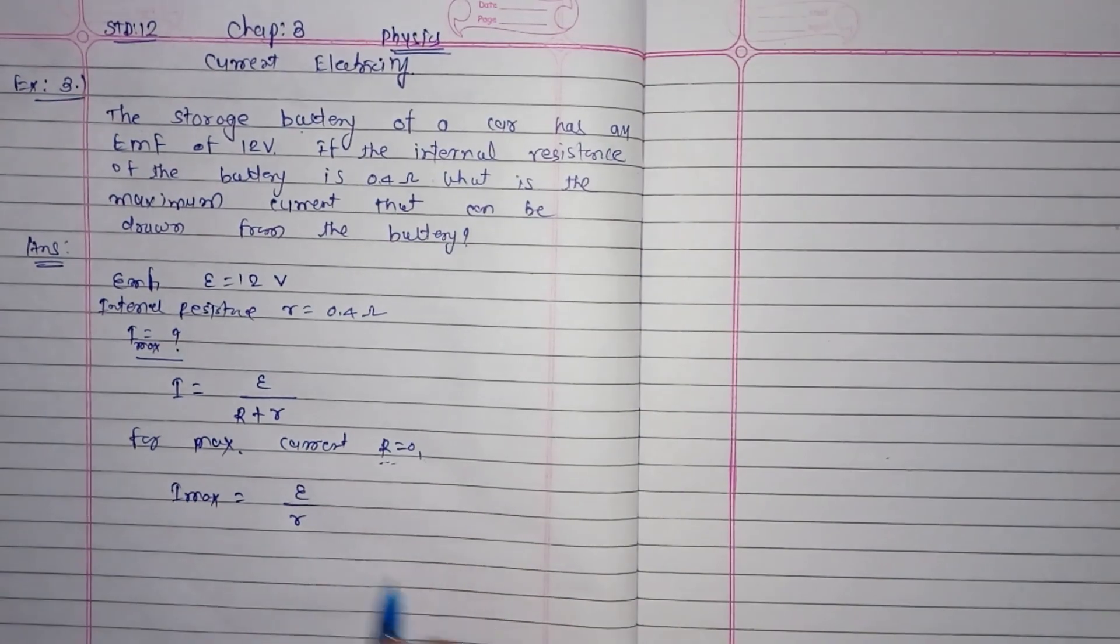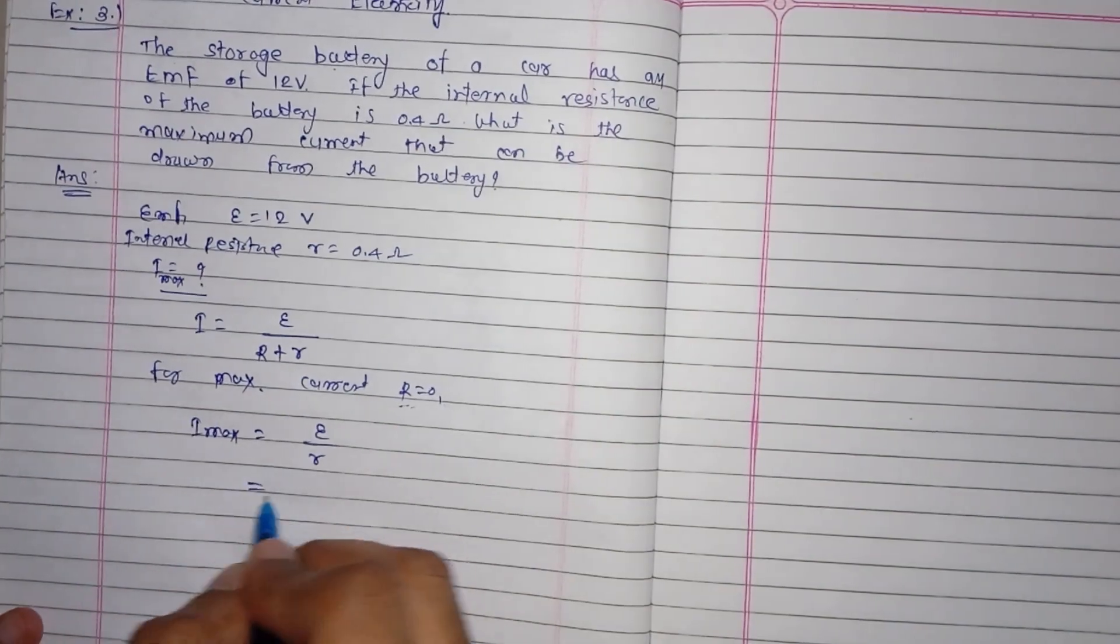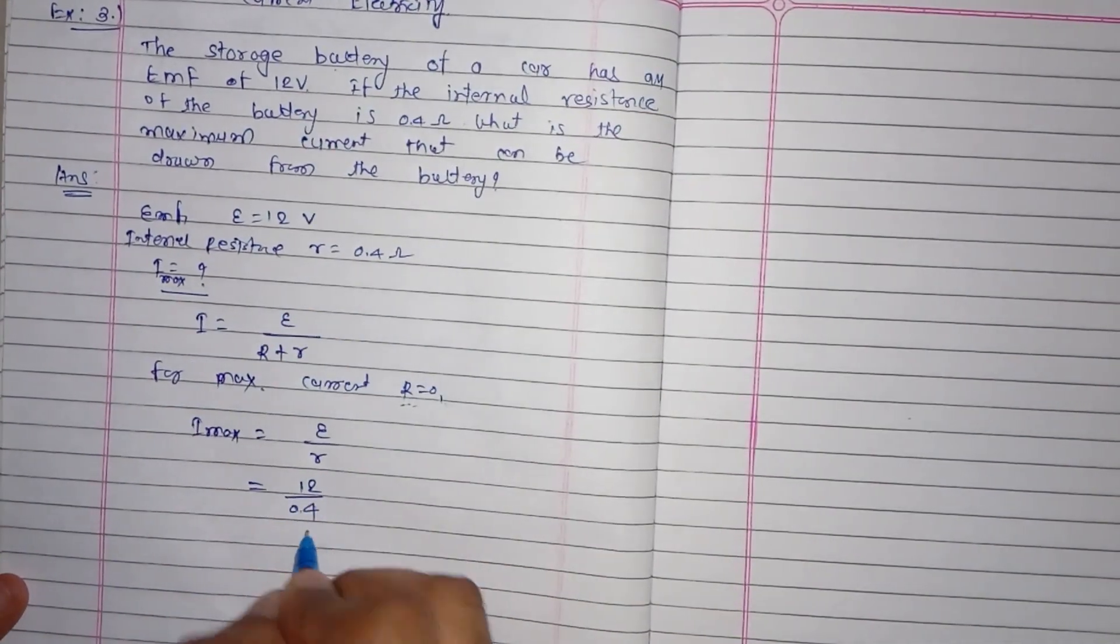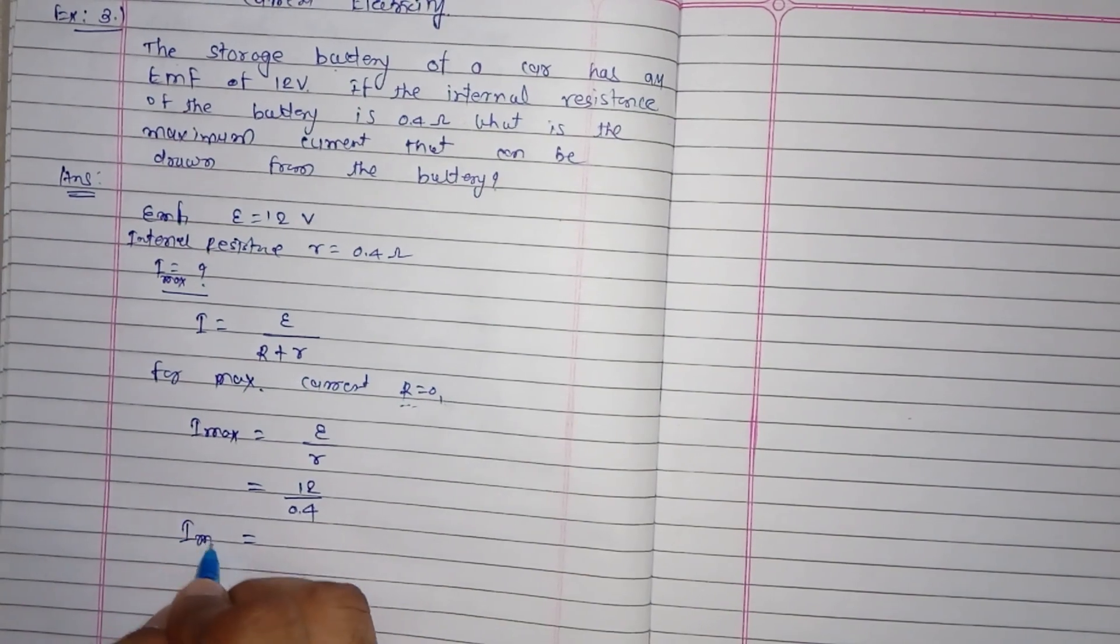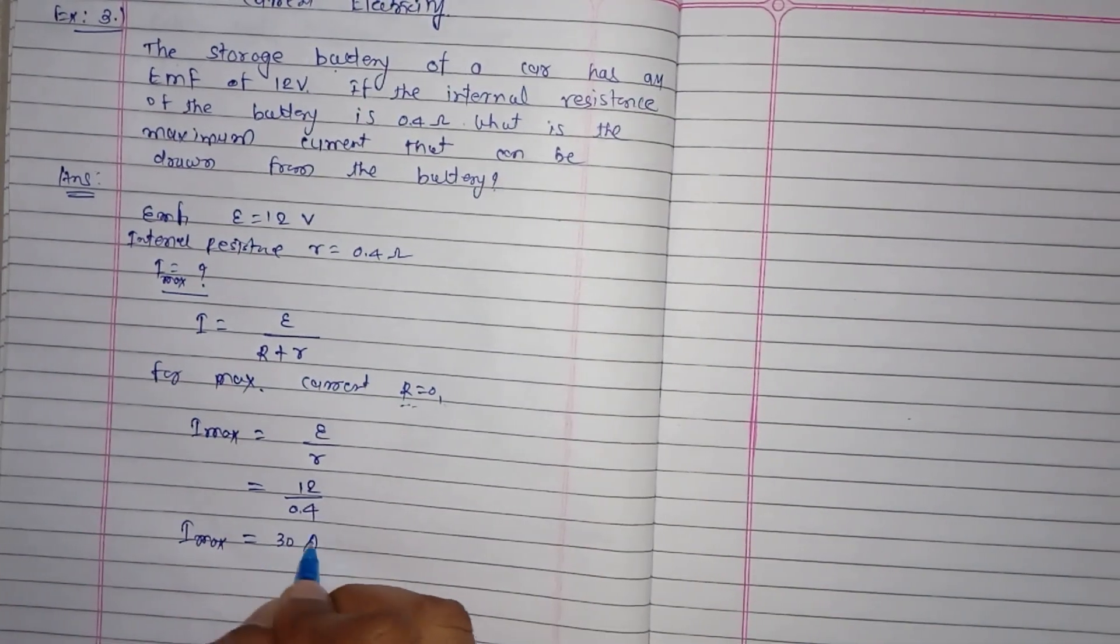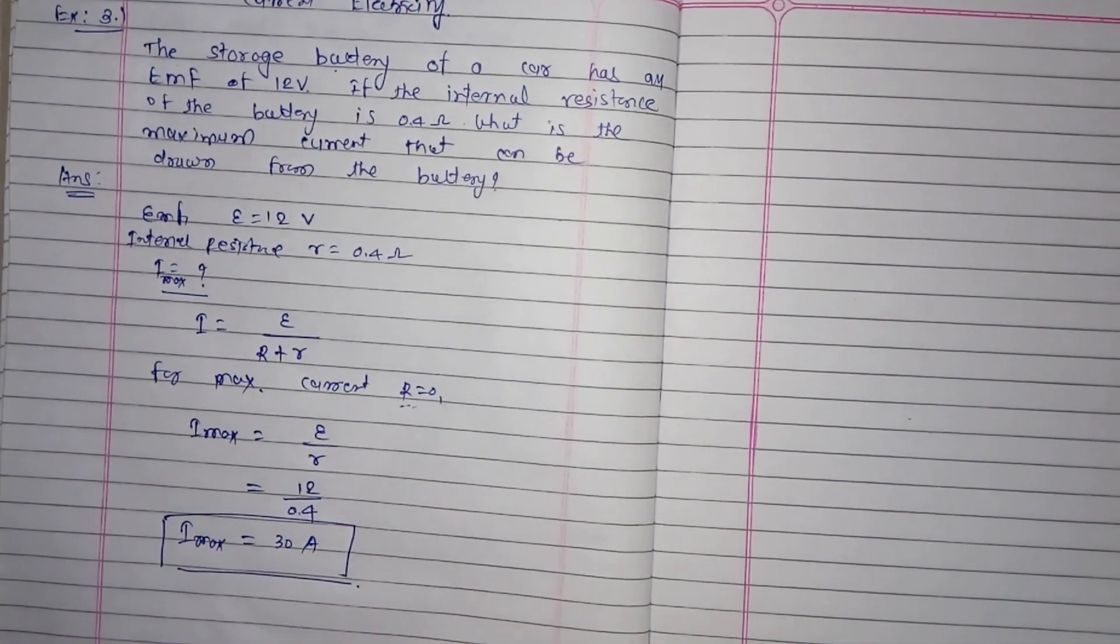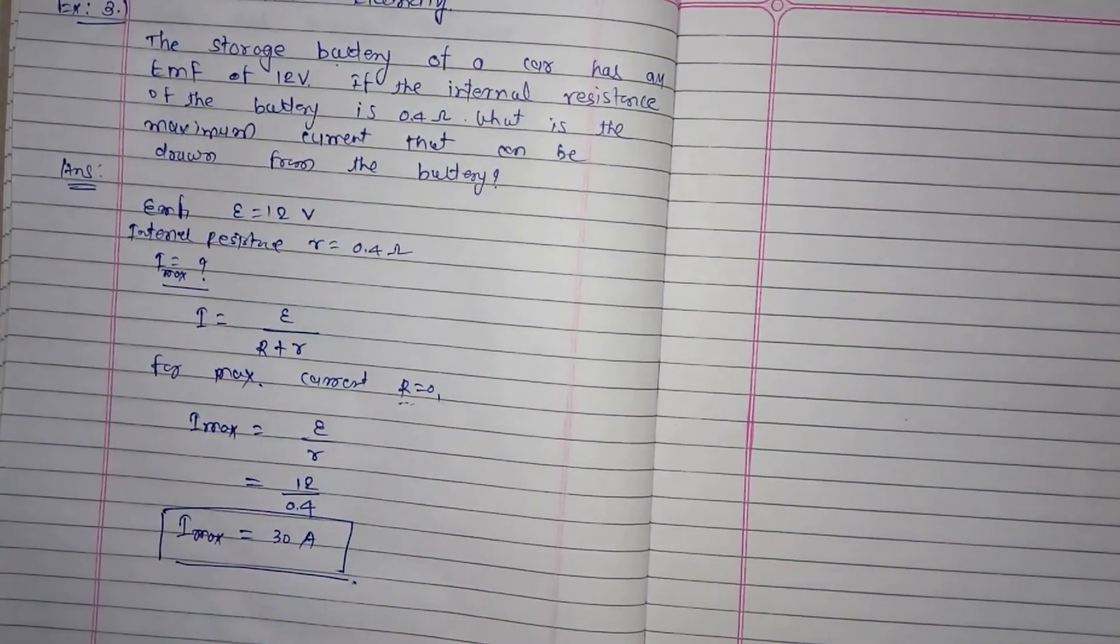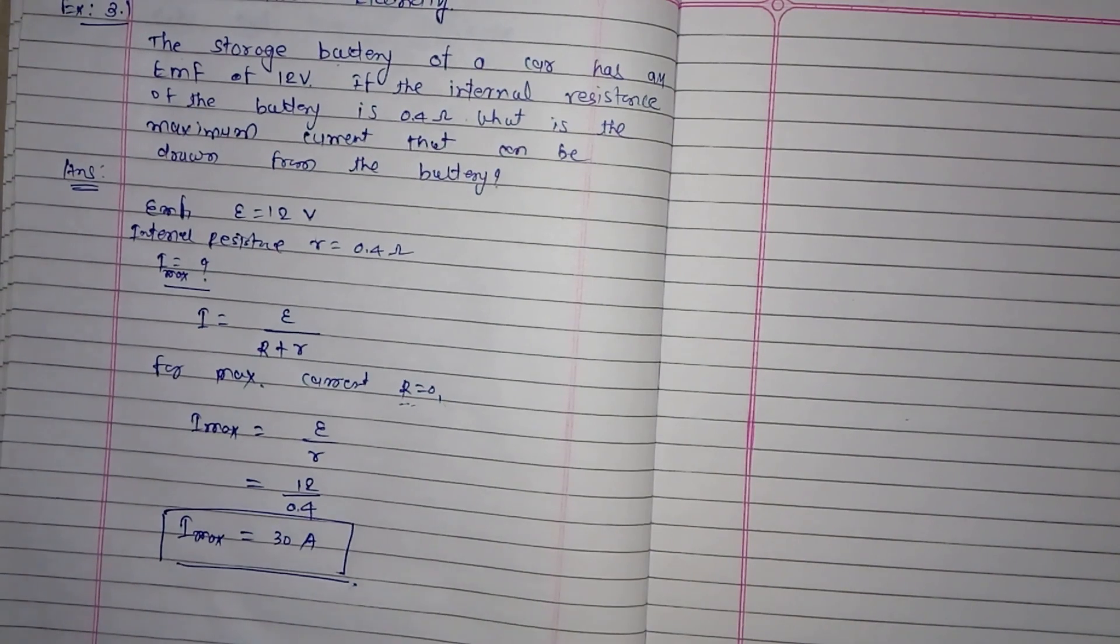EMF given is 12 volts, 12 divided by 0.4. So I max is equal to 30 amperes. The maximum current that can be drawn from this battery is 30 amperes.